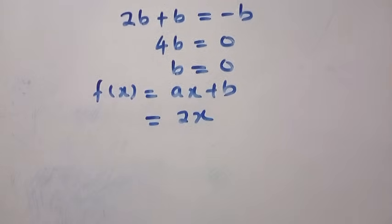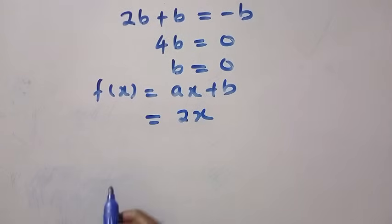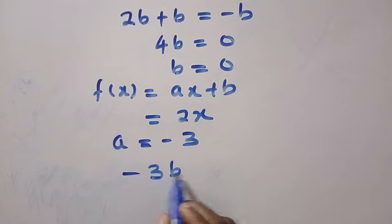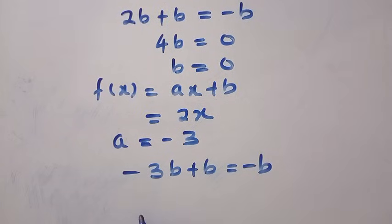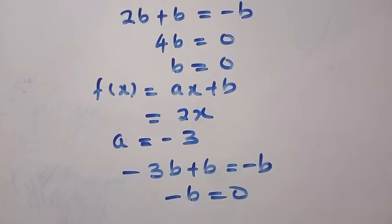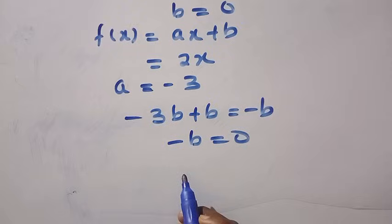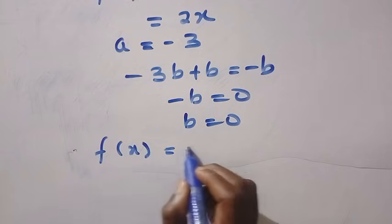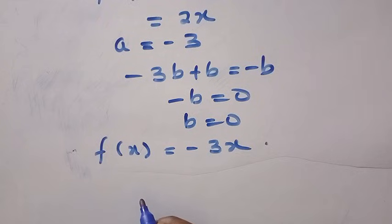If we check for when a equals minus 3, we are going to have minus 3b plus b equals minus b. This gives us minus 2b, and when this comes, we have minus b equals 0. Everything gives us b equals 0 again, which shows that f of x also gives us minus 3x. These are the two things that we get for f of x.